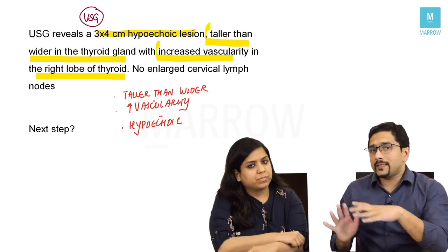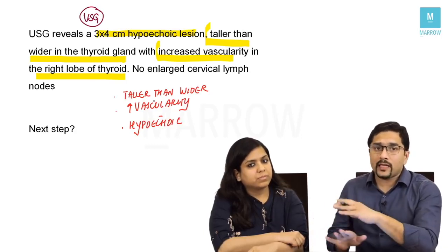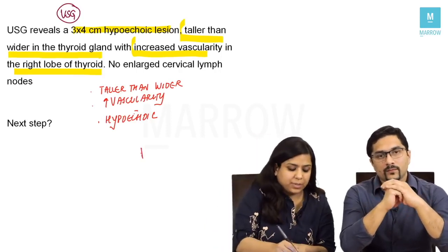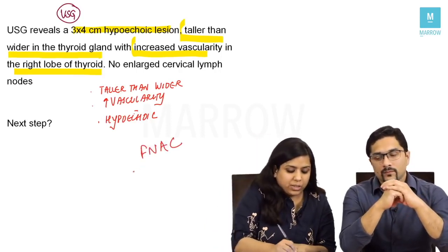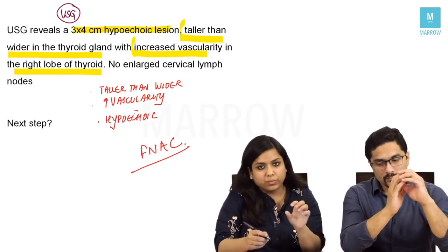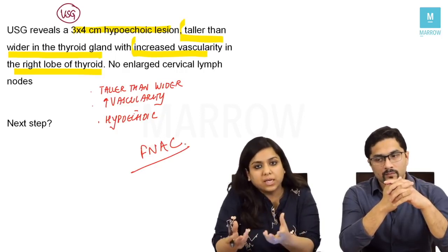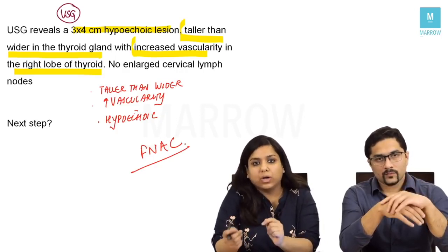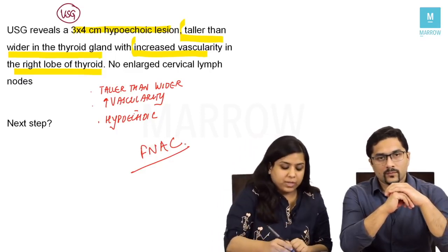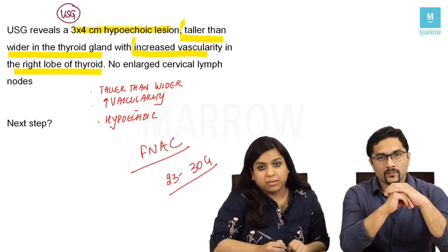Once the ultrasound is done, we send the patient to the pathologist for the next investigation: fine needle aspiration cytology, or FNAC. In FNAC, we put a needle inside the thyroid gland, take the aspirate out, stain it, and look under the microscope for features. The needle used for FNAC is a 23 to 30 gauge needle.